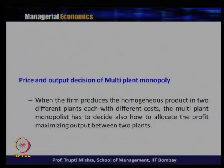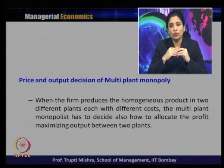We will now take the case of a multi-plant monopoly. Multi-plant monopoly is one where the firm produces the same homogeneous product in different plants at different costs of production. If the firm has to produce 100 units, it can produce them in two or three different plants where the per-unit cost of production differs — higher in some and lower in others. The multi-plant monopolist must also decide how to allocate the profit-maximizing output between the two plants.